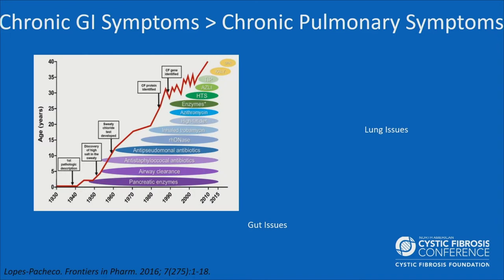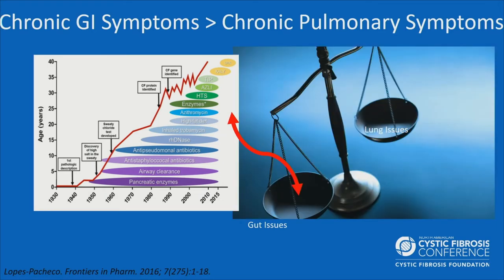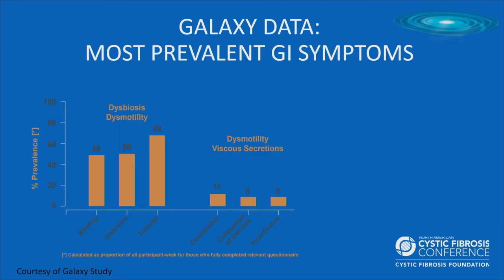With the advent of highly effective modulator therapy, pulmonary symptoms are getting better and lung function is improving. But what we see now in CF clinics is that GI symptoms are outweighing many of the lung problems. From the Galaxy data, GI symptoms are very prevalent: a survey of community voice participants and CF care providers showed many patients reporting bloating, distension, and fullness — representing dysbiosis and dysmotility — as well as constipation, diarrhea, and incontinence.